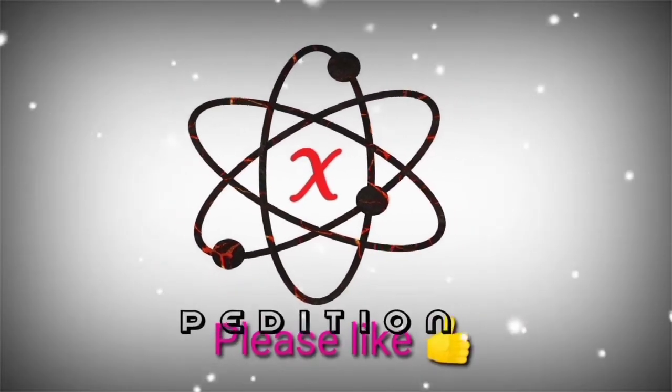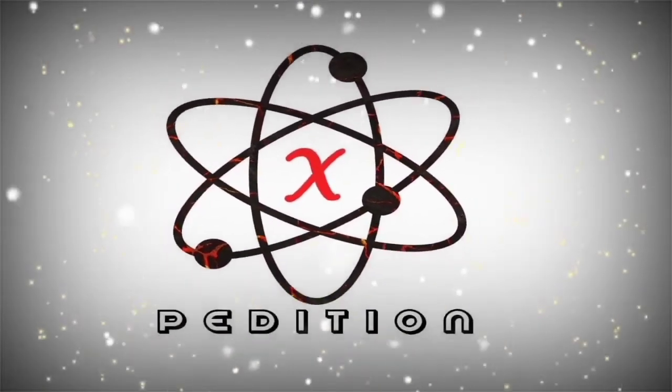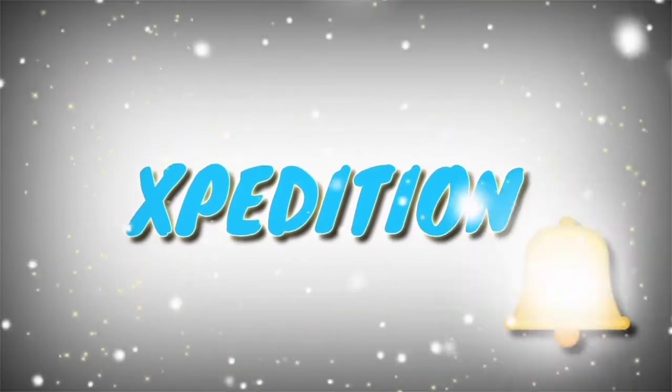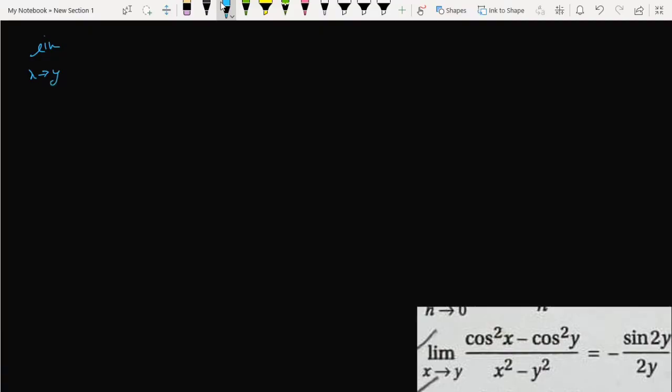Welcome to Expedition. Please like, comment, and subscribe, and press the bell icon for quick notifications. Thank you. So here it is: limit as x tends to y of cos²x minus cos²y divided by x² minus y². We have to prove this.